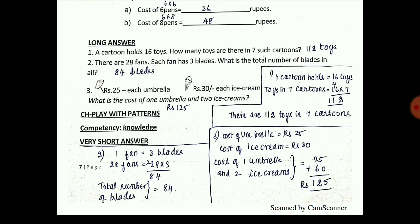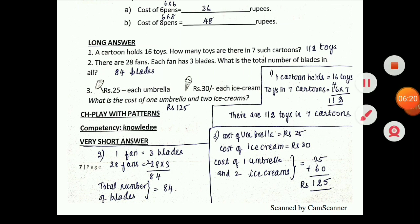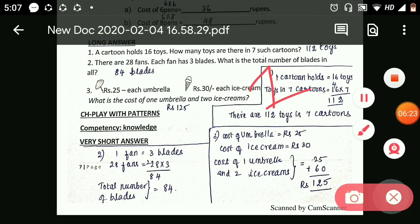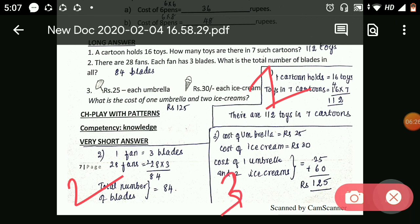Next is long answer. In long answer you have to write the steps - only then you will get full marks. In short answer you can just write the answer alone. For long answer, try to make it in steps. First, write what is given in the question. For example: a carton holds 16 toys - how many toys are there in 7 such cartons? 1 carton equals 16 toys; toys in 7 cartons equals 16 into 7 equals 112. So there are 112 toys in 7 cartons - you have to write in words with steps.